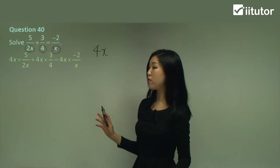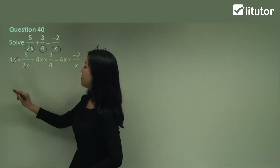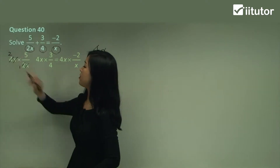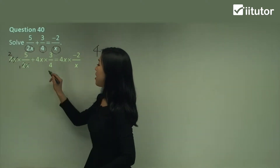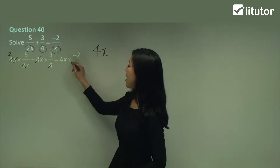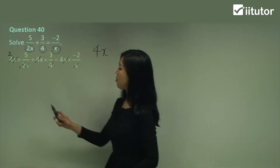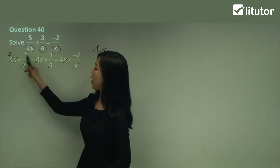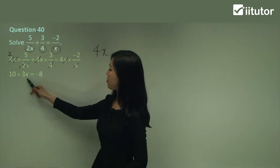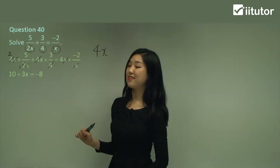So I'm going to multiply everything by 4x. Here the x will cancel out, and 4 divided by 2 — that becomes a 1, that becomes a 2. Here the 4 and the 4 completely cancel out, and here the x is completely cancelled out. And we have 2 times 5 left, which is 10. x times 3, which is 3x. And 4 times negative 2, which is negative 8.